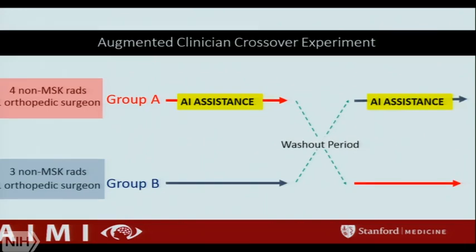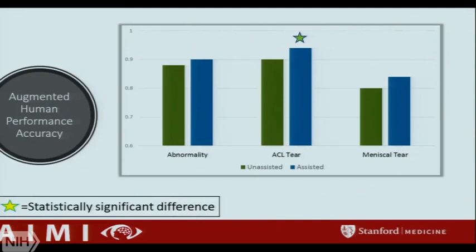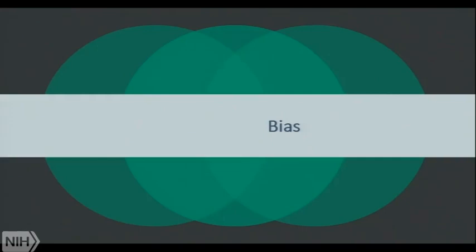We randomized the order and switched the groups so we could best determine the effect of AI assistance. With a small sample size, we saw a trend of improvement in every category, even on meniscal tear. We saw a statistically significant improvement in ACL tear, and further analysis showed specificity also improved for ACL tear — meaning fewer false positives and fewer people going to the OR for suspected ACL tear. This speaks to what Keith said: there are opportunities to use classifiers, even imperfect ones, to help radiologists and others make better decisions.